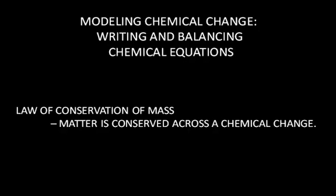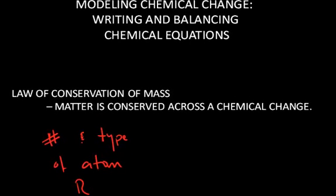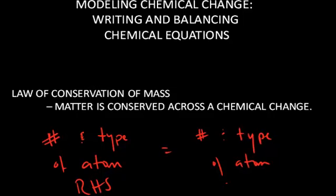The guiding principle is the law of conservation of mass, which states that matter is conserved across a chemical change. What that means is the number and type of atom on the right hand side equals the total number and type of atom on the left hand side of a chemical equation.